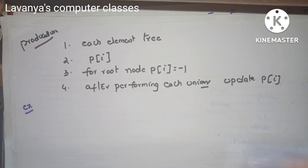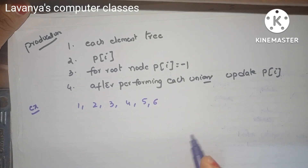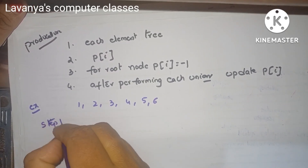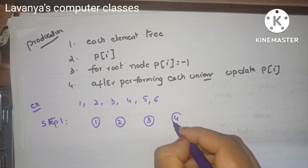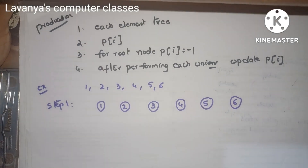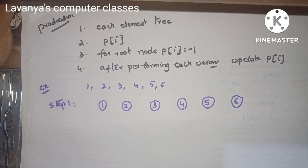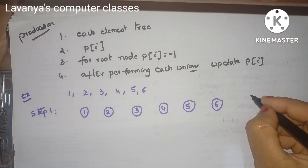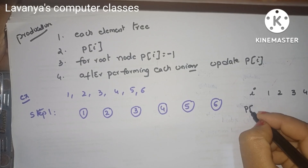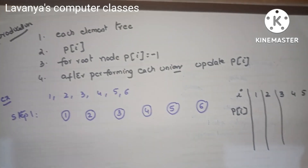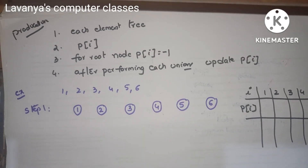We will explain this procedure with an example. Take 6 elements: 1, 2, 3, 4, 5, 6. Step 1: consider each element as a separate tree — elements 1, 2, 3, 4, 5, 6 are all individual tree nodes. We create a table with I values 1 through 6 and a corresponding P(i) column. P(i) values are filled in after performing union operations.